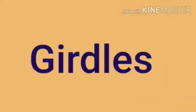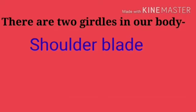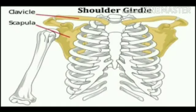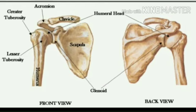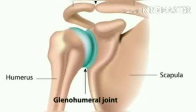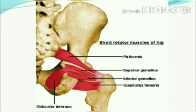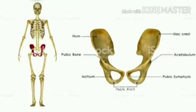The next part is the girdles. There are two girdles in our body: the shoulder girdle, also known as the shoulder blade, and the hip girdle. Bones of the arms are attached to the shoulder girdle, and the hip girdle attaches the bones of the legs to itself. The two girdles attach the limbs to the trunk, connecting the bones of the arms and legs to the main trunk of the body.